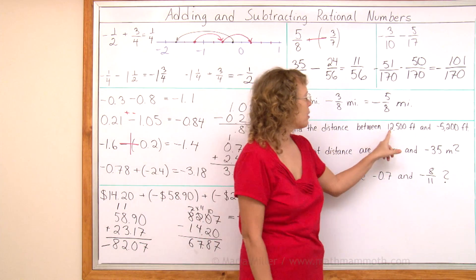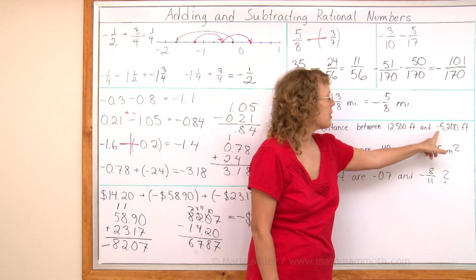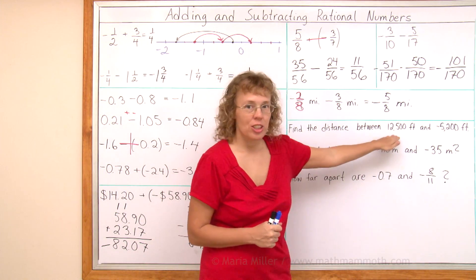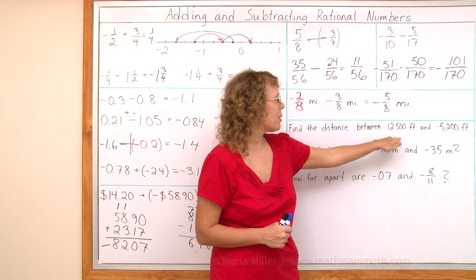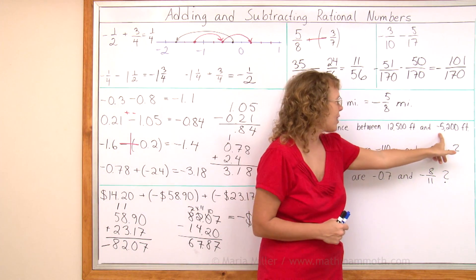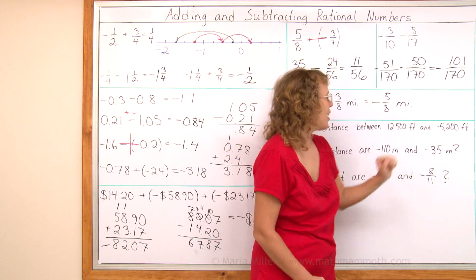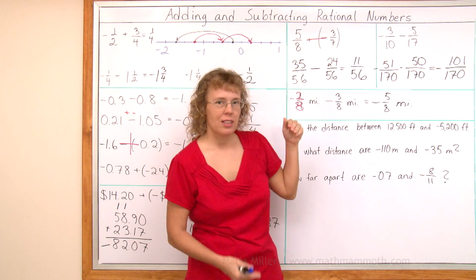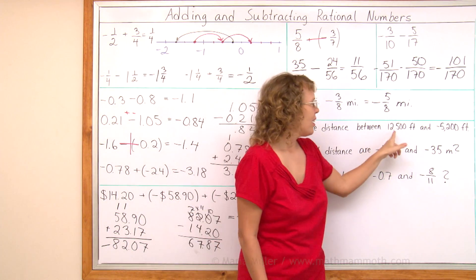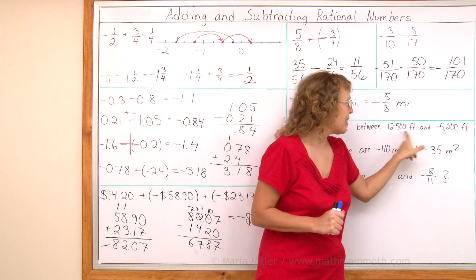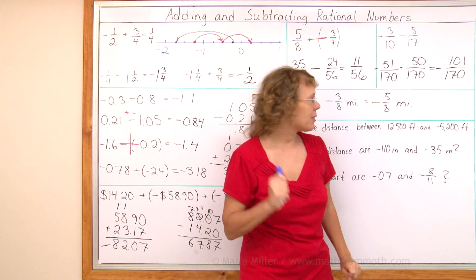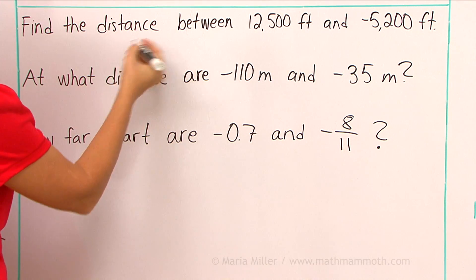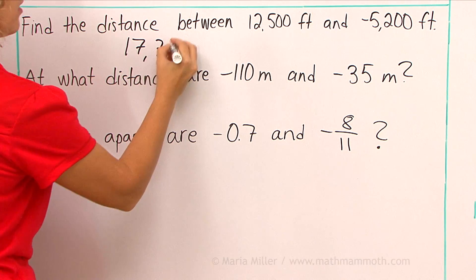Next one. Find the distance between twelve-thousand five-hundred feet and negative five-thousand two-hundred feet. Again, we're going to think of elevation and depth. So this would be like a mountain top, and this is like some kind of deep ocean trench. What's the distance between the two? Mountaintop and then way down in the ocean. What we will do is we will simply add the absolute values. We add twelve-thousand five-hundred and five-thousand two-hundred. So we will get seventeen-thousand seven-hundred feet.